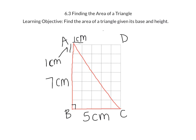We already know that the area of a rectangle is base times height. So we would calculate the area of this rectangle by multiplying 5 times 7 which equals 35 square centimeters.